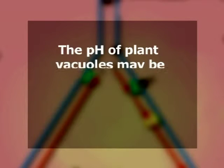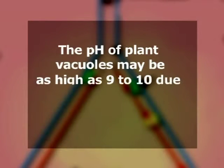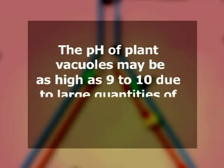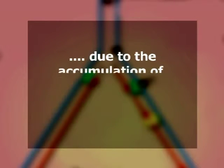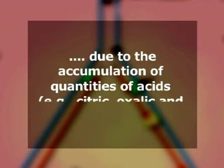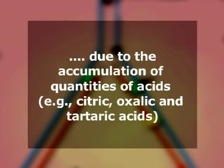Vacuoles may contain a wide range of hydrolytic enzymes. In addition, they usually contain sugars, salts, acids, and nitrogenous compounds such as alkaloids and anthocyanin pigments. The pH of the plant vacuoles may be as high as 9 to 10 due to large quantities of alkaline substances, or as low as 3 due to the accumulation of acids — for example, citric acid, oxalic acid, and tartaric acids.